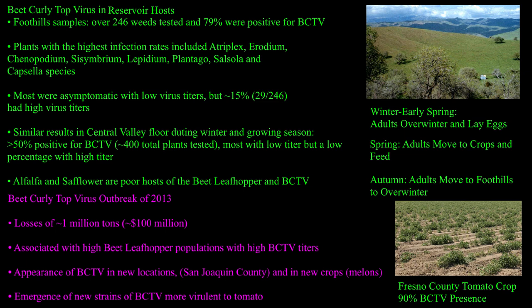Some plants have symptoms associated with BCTV, and other plants do not, and there's no way to know unless you test those plants. Plants that are actually symptomatic, like cannabis, will have chlorosis in the leaves, stunted growth, and ultimately death, while other plants will be totally unaffected. This is a problem because it allows the leafhoppers to feed on those plants, become infected themselves as a vector, and then move to other plants.